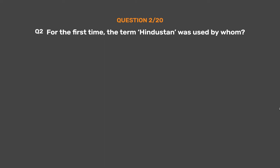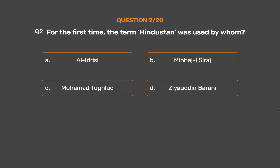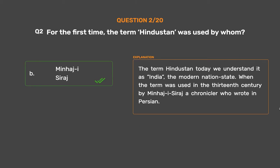Question 2: For the first time, the term Hindustan was used by whom? Option A: Ali Drisi. Option B: Minhaj-i-Siraj. Option C: Muhammad Tughlaq. Option D: Ziauddin Barney. The correct answer is Option B: Minhaj-i-Siraj. The term Hindustan, as we understand it today as the modern nation state India, was used in the 13th century by Minhaj-i-Siraj, a chronicler who wrote in Persian.